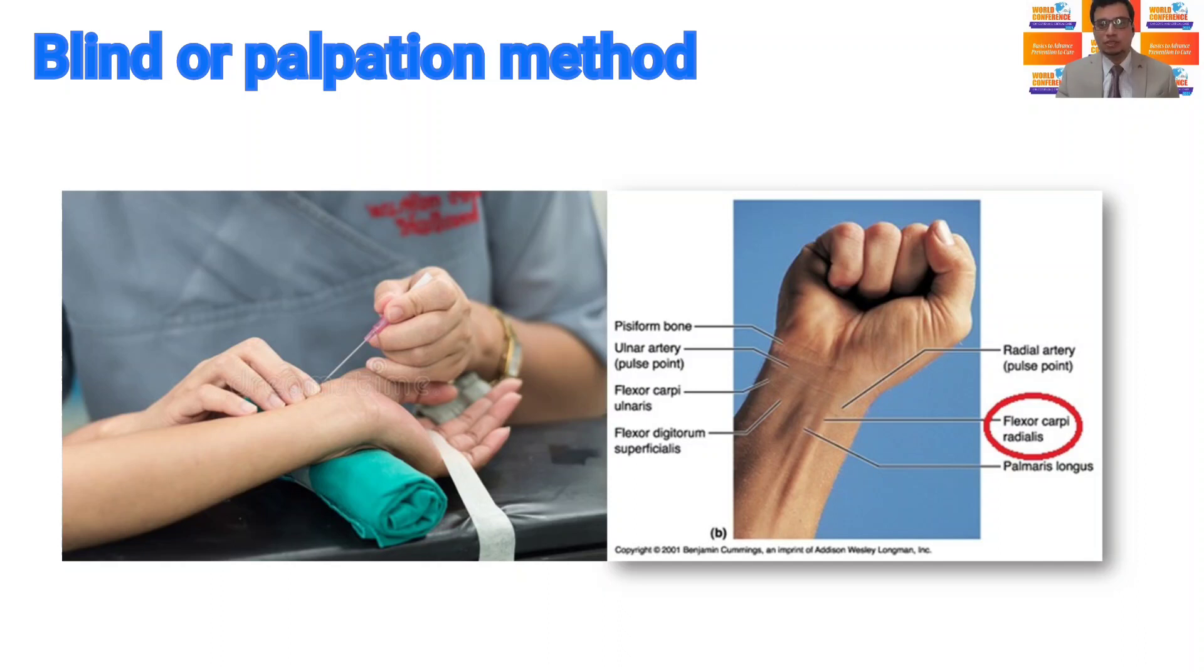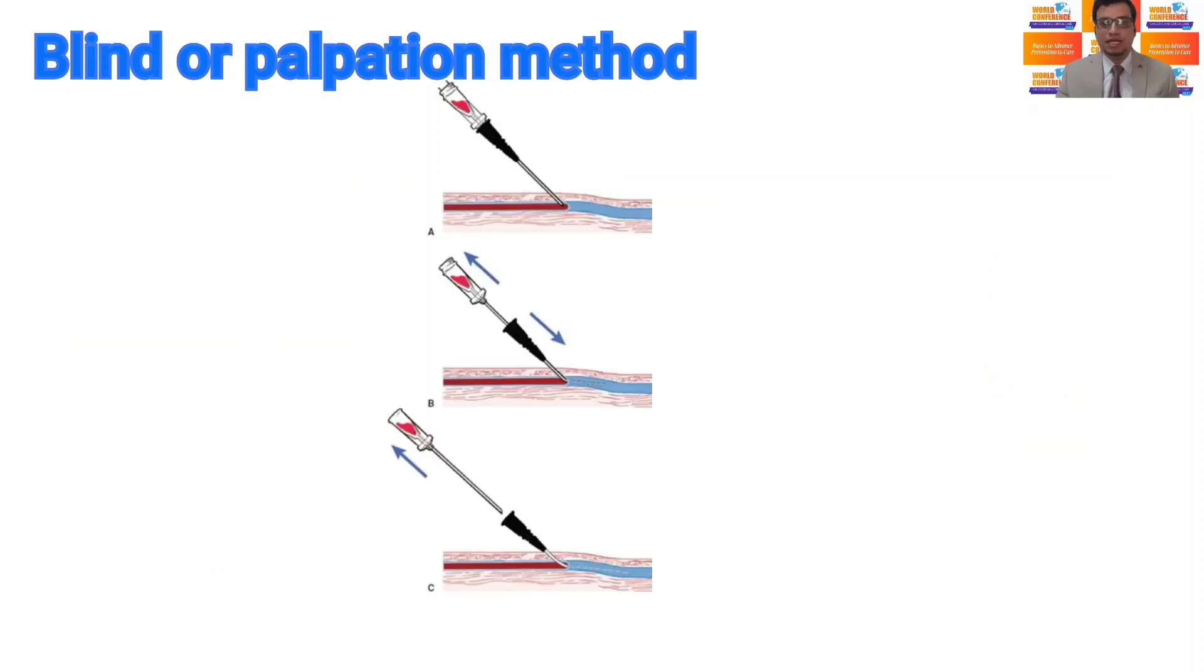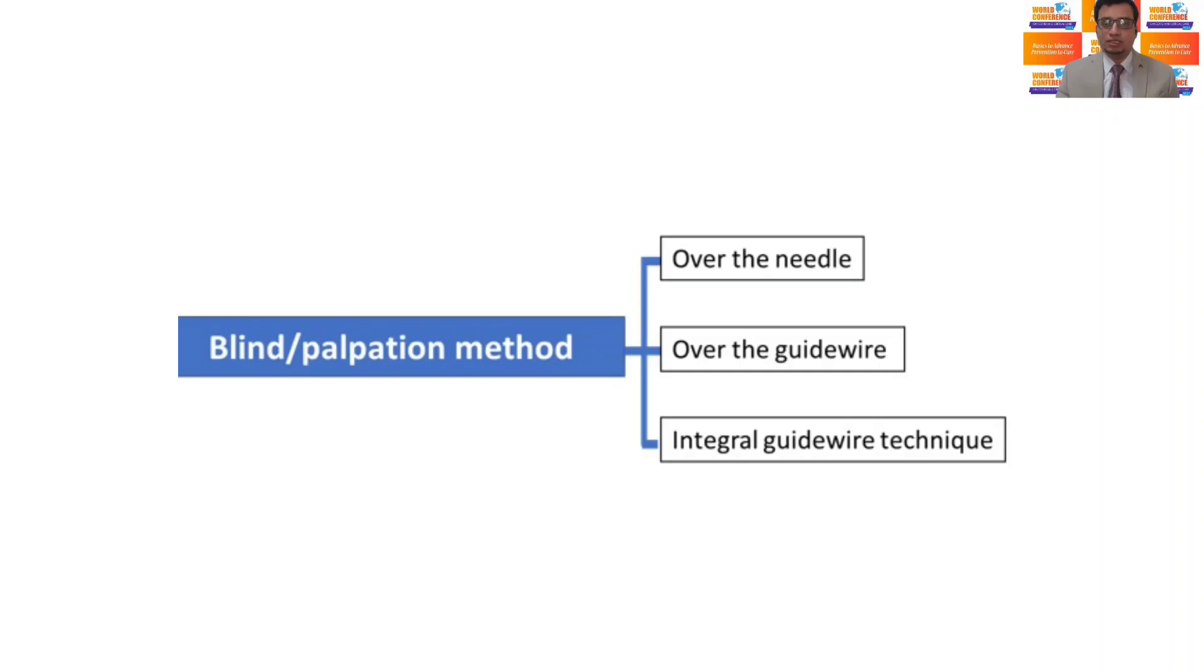The arterial catheter with needle is inserted at a 30 to 45 degree angle towards the artery. Now, depending upon the type of cannula, three techniques have been described in the literature: over-the-needle technique, over-the-guidewire technique, and over-the-needle-and-guidewire technique.